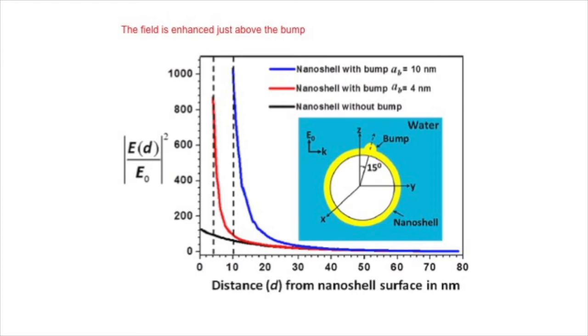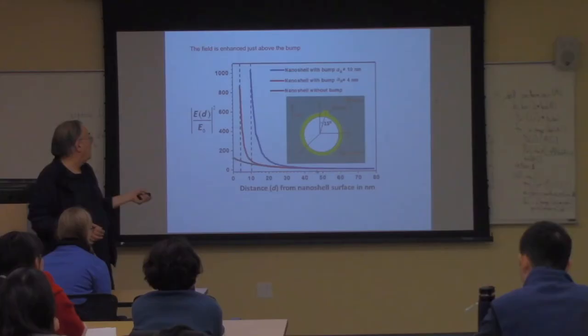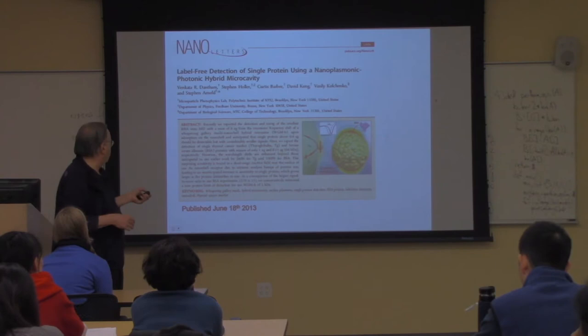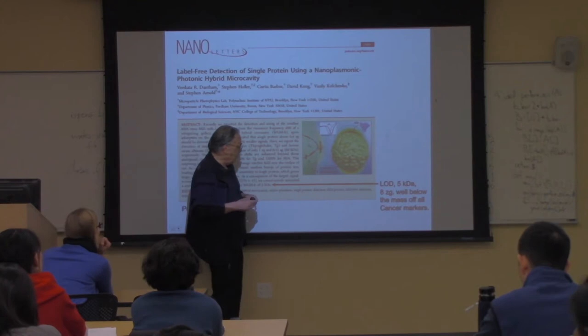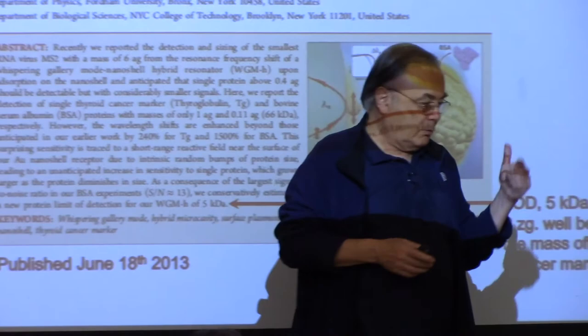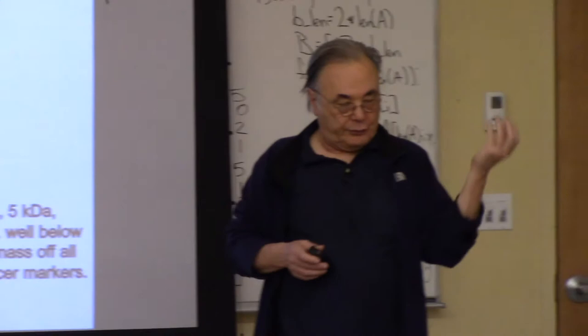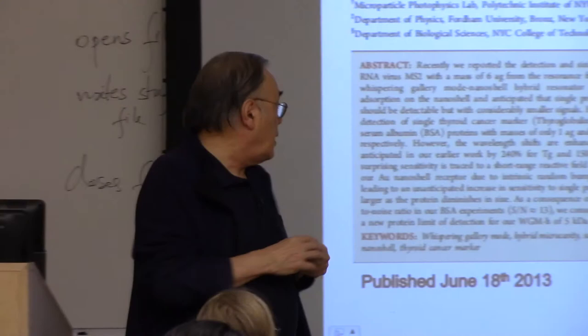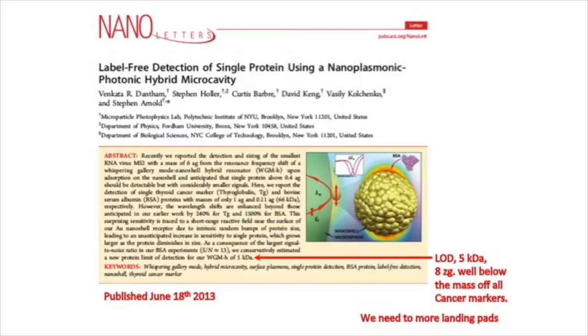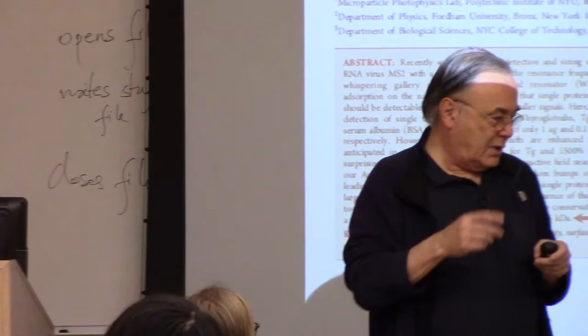We published this in 2013 and it's been taking off in the literature. We're now down to a sensitivity of 8 zeptograms — well below where I ever expected we would be. A single protein on the surface, the epitopes, has a mass on the order of 30 kilodaltons, which is 10 or 20 times higher than our current sensitivity. Our sensitivity is now 8 zeptograms. Attograms is 10 to the minus 18; zeptograms is 10 to the minus 21 grams.